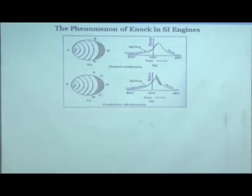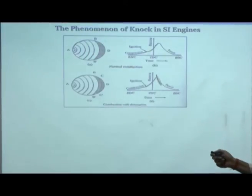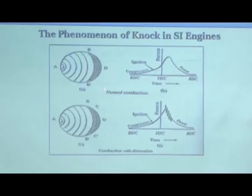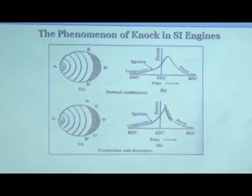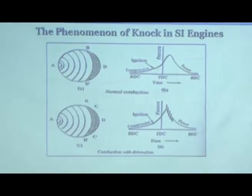Here is an explanation of the knock phenomenon in a spark ignition engine. Suppose this is the combustion chamber with the spark plug on one side and the piston on the other. You apply the spark, and the flame front moves in a semicircular manner — behind the flame front is the burnt charge and ahead is the unburnt charge. As the flame front moves it releases heat, and what it does is compress the unburnt charge, so the pressure and temperature of the unburnt charge further rise.